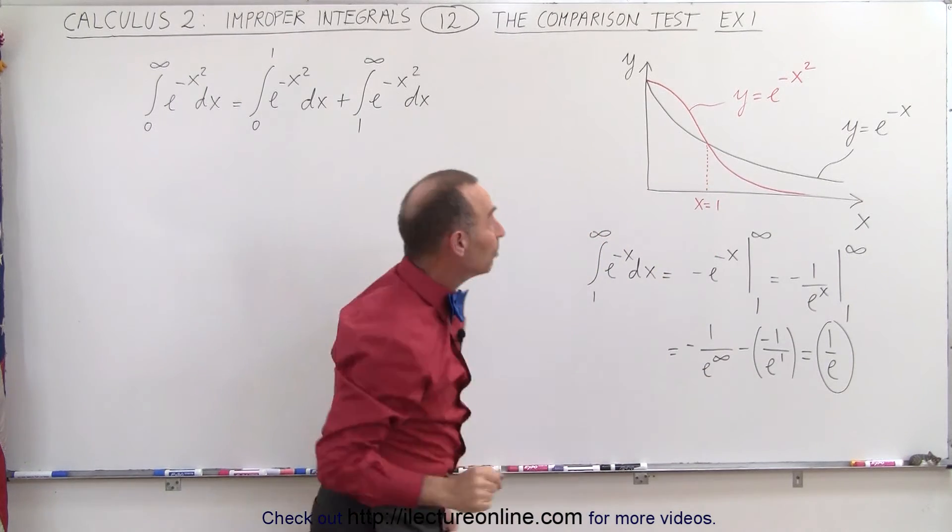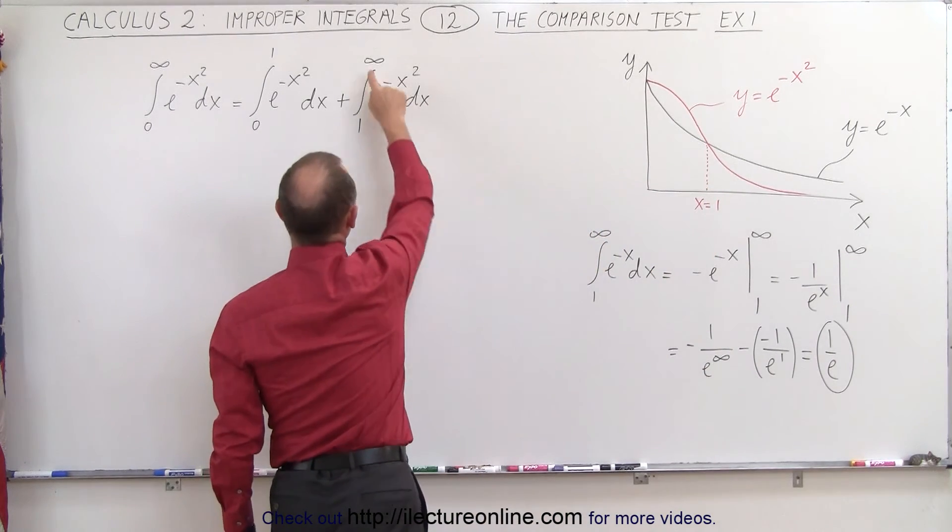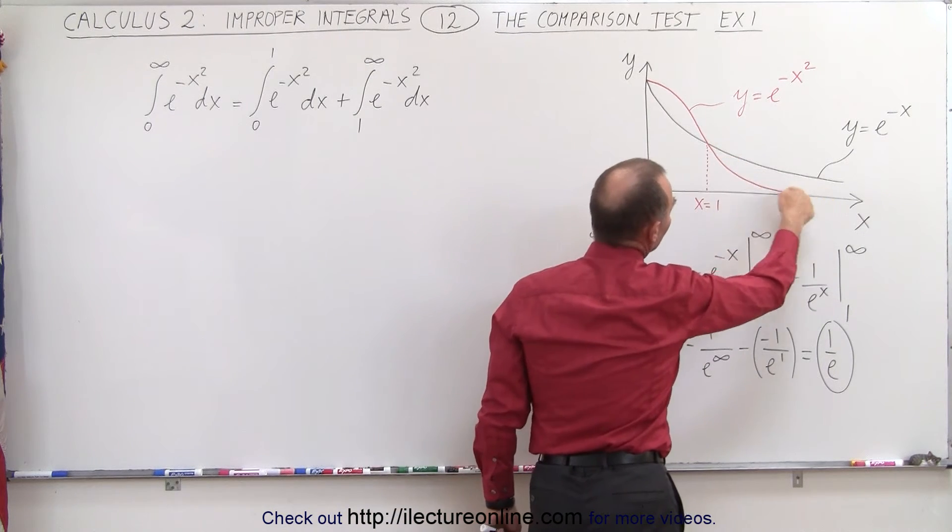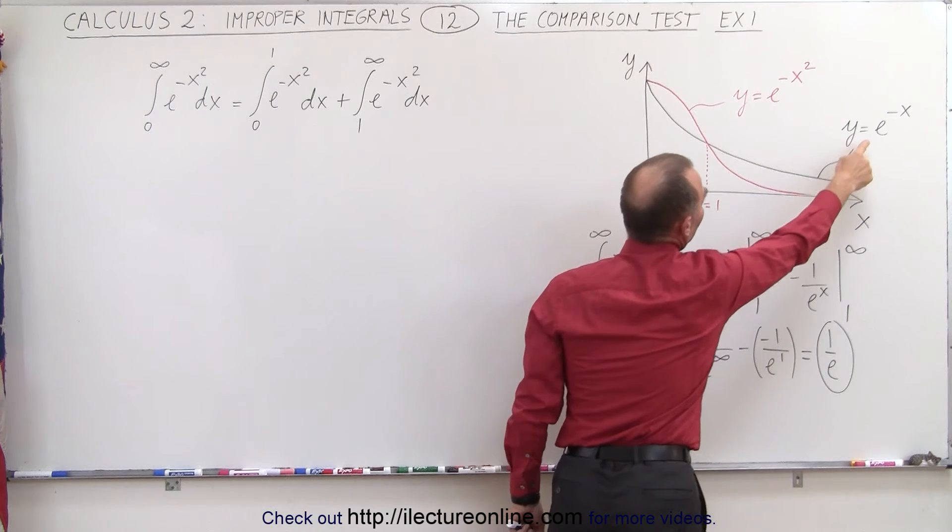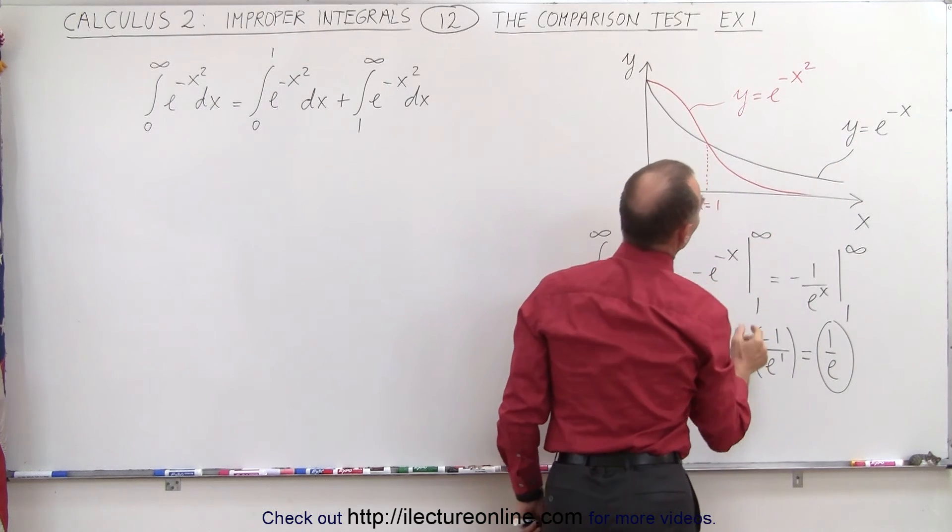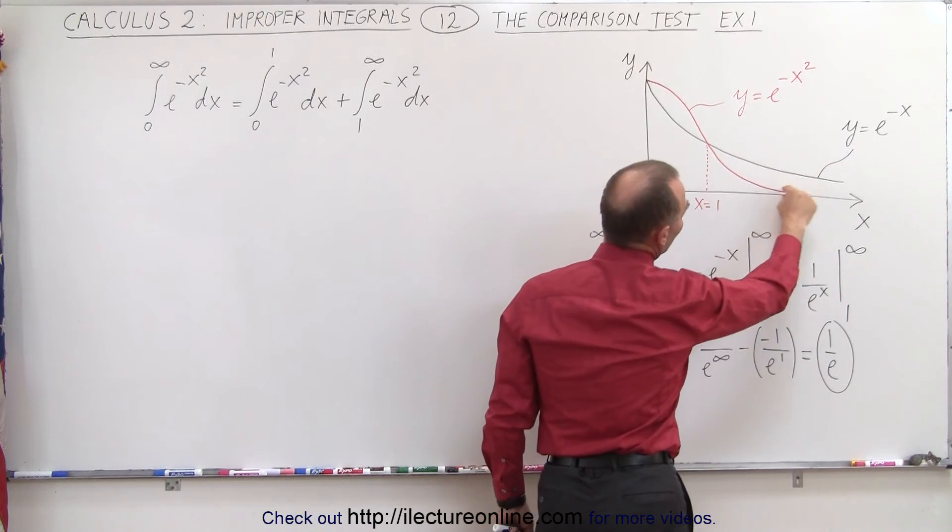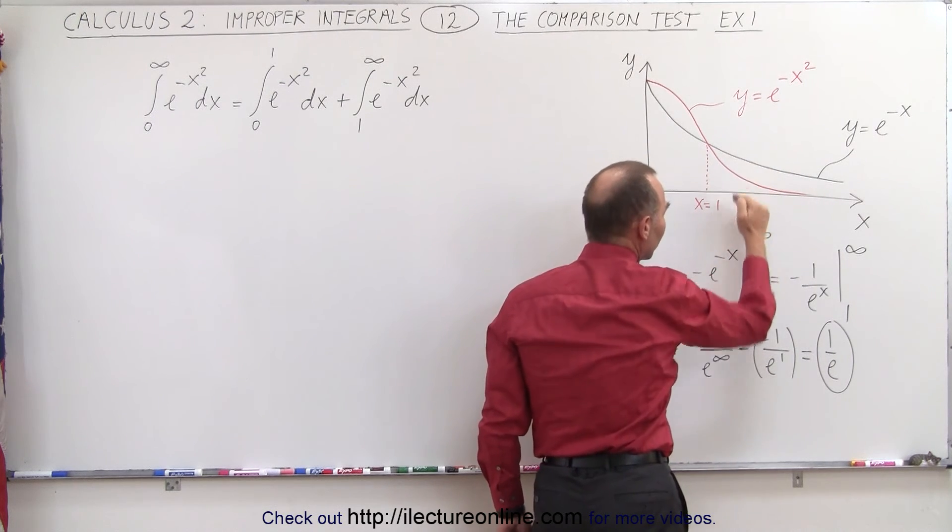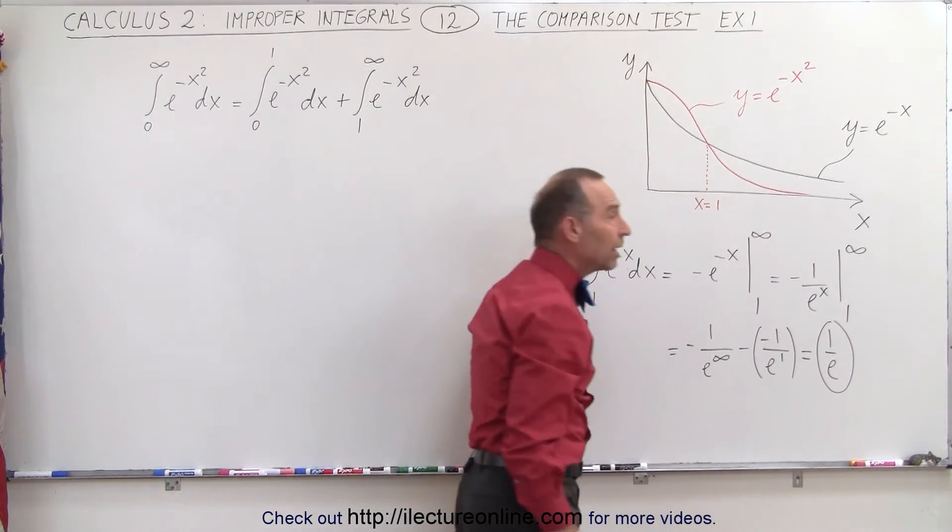Now, for the second part, from 1 to infinity, notice that's the function right here, and this function will always be smaller than the function y equals e to the minus x. This tells us that this portion of the integral will also converge because it must be smaller than the value 1 over e.